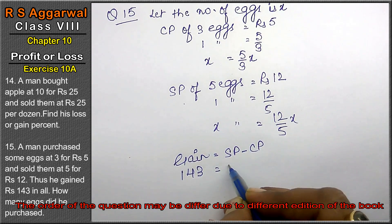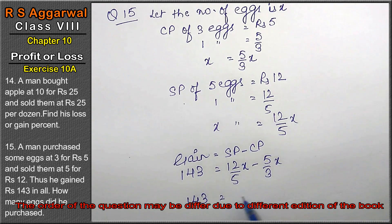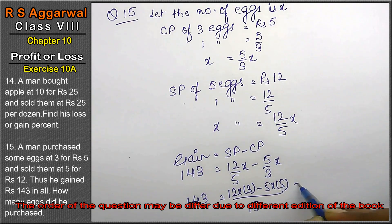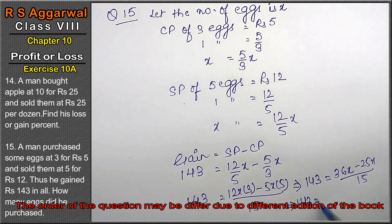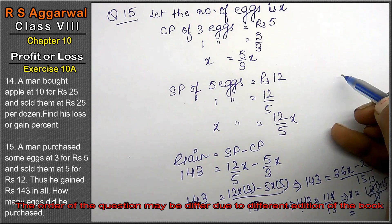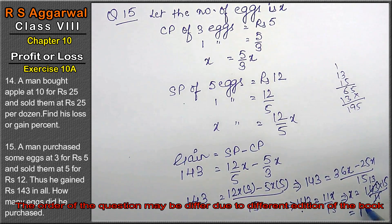So 143 = 12x/5 minus 5x/3. Taking LCM of 15: 143 = (36x minus 25x) upon 15 = 11x upon 15. Solving, x = 143 × 15 upon 11 = 13 × 15 = 195. Therefore the number of eggs is 195.